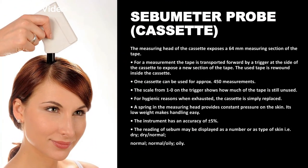This is the equipment being discussed. The black color part is known as the cassette. The measuring head of the cassette exposes a 64 mm measuring section of the tape; a trigger at the side of the cassette transports the tape forward to expose a new section. Inside the cassette, a tape runs and rewinds. One cassette is approximately used for 450 measurements. The scale from one to zero on the trigger shows how much of the tape is still unused. For hygiene reasons, when exhausted, the cassette is simply replaced. A spring in the measuring head provides constant pressure on the skin. The instrument has an accuracy of plus or minus 5%.